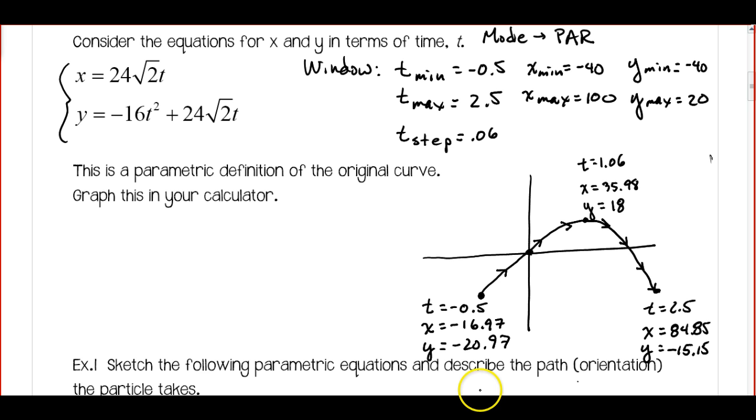So again, another thing you want to notice here is that your graph has a definite beginning and a definite end based on the t min and the t max that you picked. And this is something that we normally wouldn't see when we graph a rectangular equation on the calculator. It graphs for every single value. But with our parametrics, we can get a very specific part of the graph depending on our values of t.